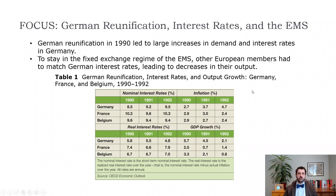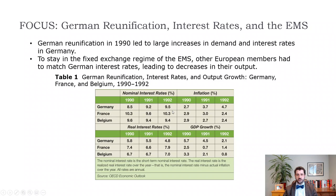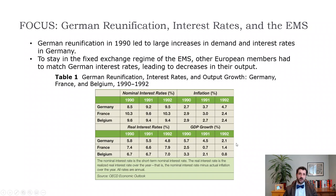With German reunification, there was a big increase in demand that led to higher interest rates in Germany. Since other European members were in the European Monetary System, they had to increase their interest rates as well. German interest rates were over 9%, France's over 10%, and Belgium's over 9% — pretty high rates. High real interest rates lead to lower investment and, of course, lower GDP. So while German growth was pretty high during reunification, French and Belgian growth was fairly low, especially around 1991–1992. This was a problem, and maybe a sign of things to come with the euro.